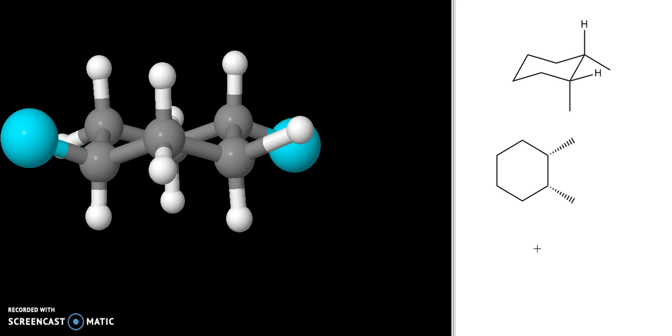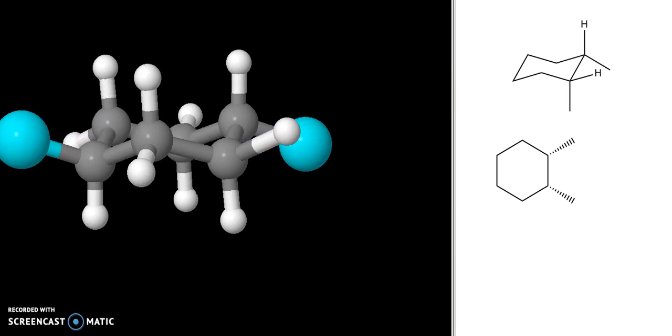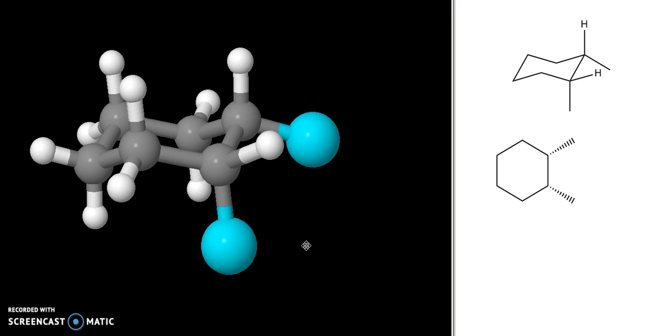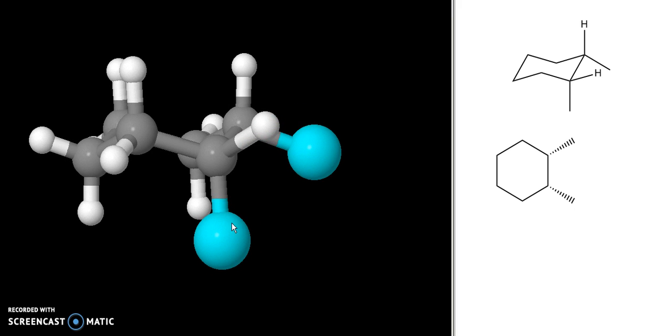So this is a lot like the first problem we looked at, except going in the opposite direction, starting with our chair form and going to the more traditional line angle form. We can look at that on our three-dimensional model as well, like this with this methyl slanted down, equatorial. This one pointed down, axial. They're cis to one another.